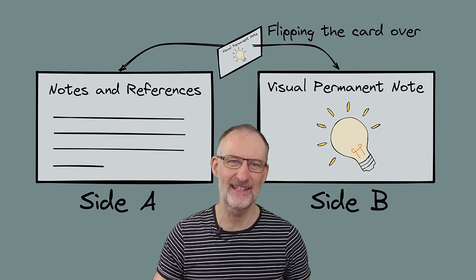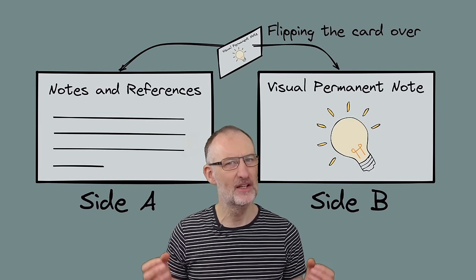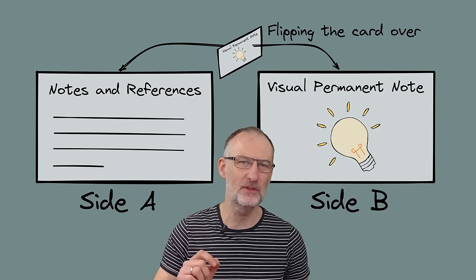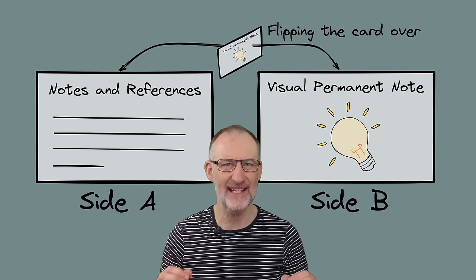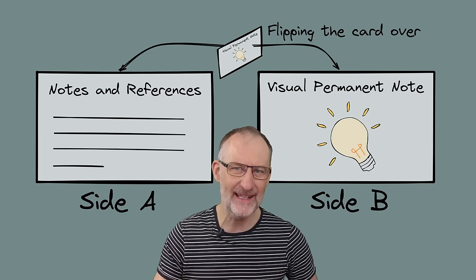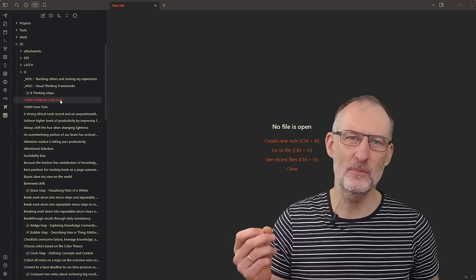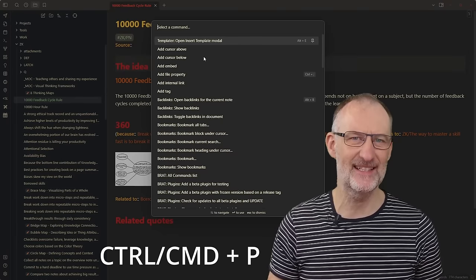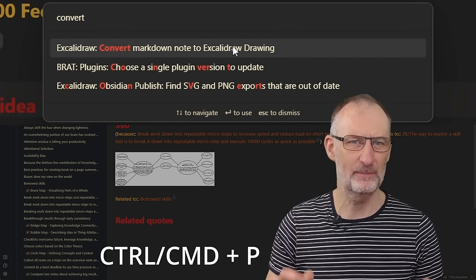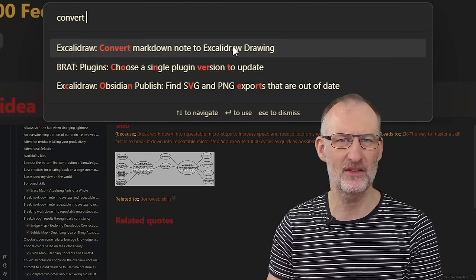I'm going to implement a feature to convert your existing Markdown notes into Excalidraw notes. That will give you the freedom so that even if you have started with a Markdown note but think you should add a drawing on the other side, that's going to be easy to do. Now you can flip any Markdown document over with a new Command Palette action. Simply open an existing Markdown document, access the Obsidian Command Palette with Control or Command P, and pick Convert Markdown Note to Excalidraw Drawing.